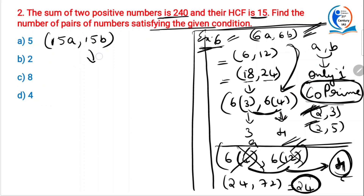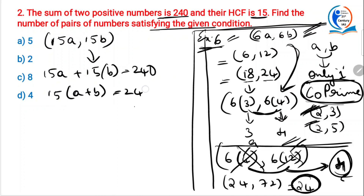Now come to this problem. Sum of two numbers is 240, so 15×(A+B) = 240. Simplifying step by step, A plus B equals 16. What are the possible values of A plus B to get 16 using positive numbers? A=1, B=15; A=2, B=14; A=3, B=13; A=4, B=12; A=5, B=11; A=6, B=10; A=7, B=9; A=8, B=8.